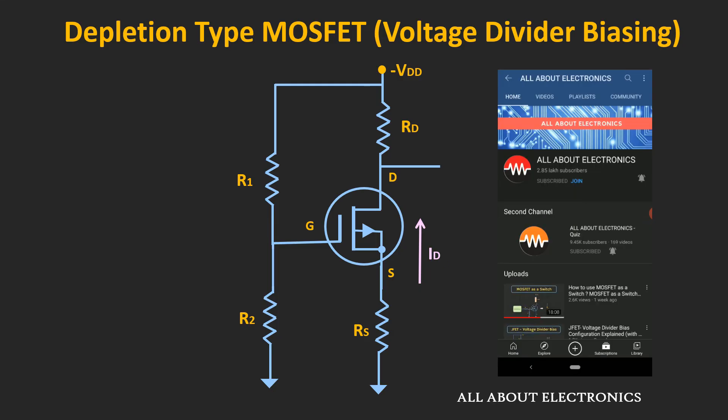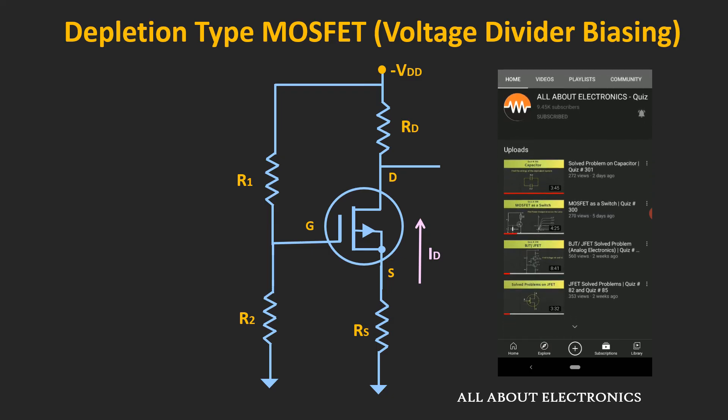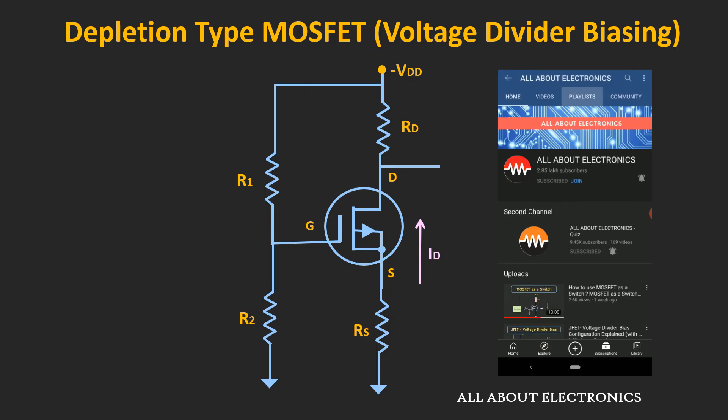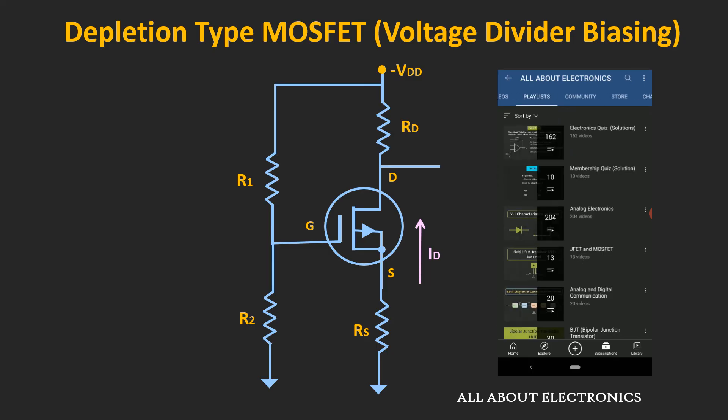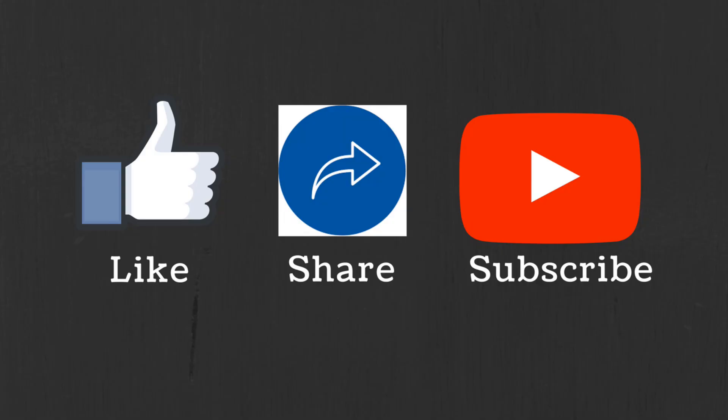On the second channel, some examples on each configuration and for the P-channel MOSFET will be covered. You can also check the playlist on JFET and MOSFET for updates. I hope this video gave you an overview of the different biasing configurations for the depletion type MOSFET. In the next video, we will similarly see the different biasing configurations for the enhancement type MOSFET. If you have any questions or suggestions, let me know in the comments. If you like this video, hit the like button and subscribe for more such videos.